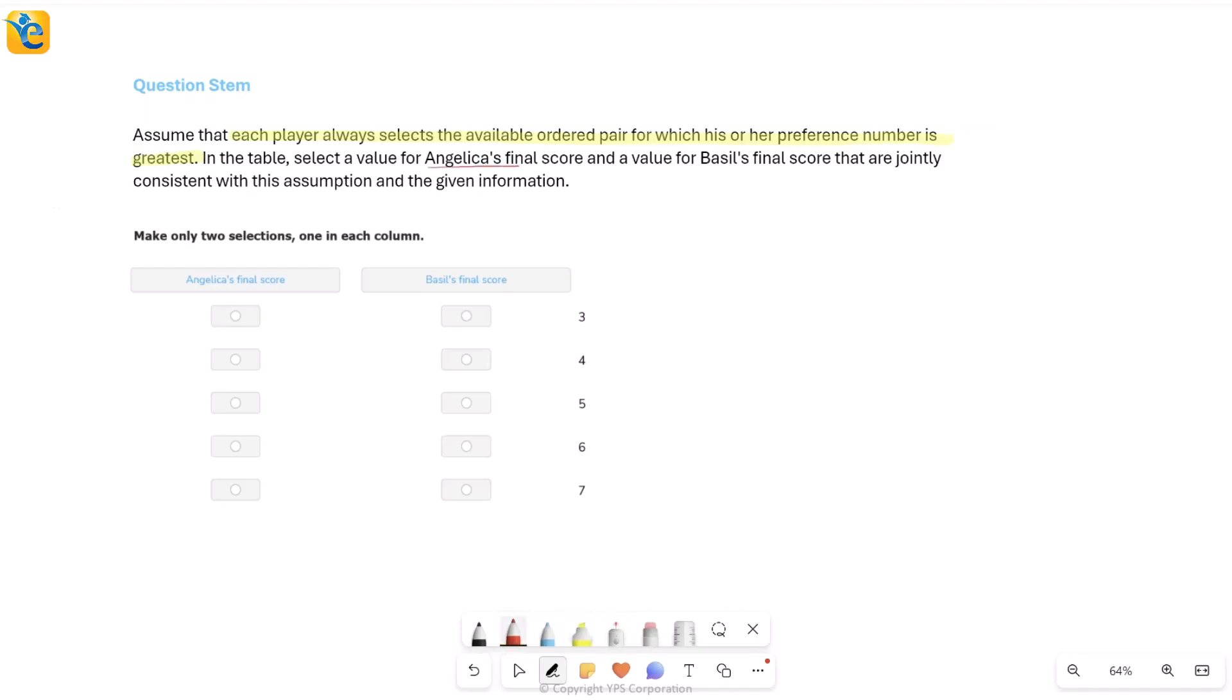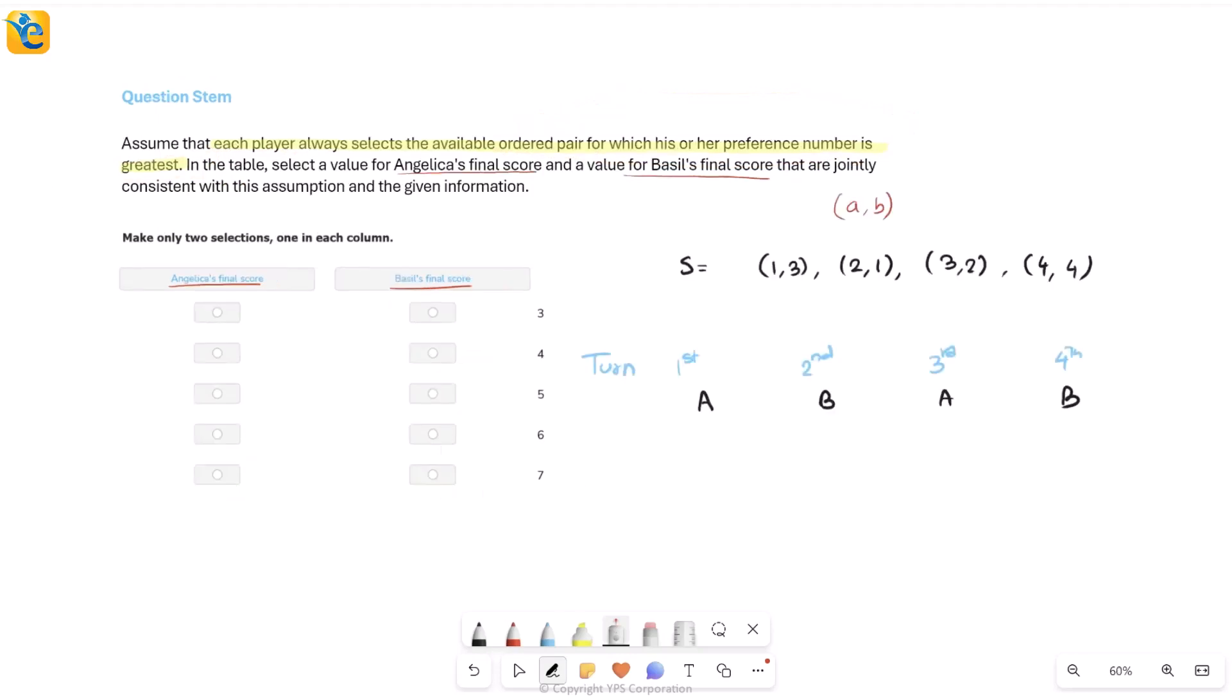The question wants you to select Angelica's final score here in the first column and Basil's final score here in the second column based on all the given information. So I'll simply bring in the things that we had earlier and we'll combine it with this new information about how the picking is done. Let's see. Perfect. Just look. Here are the four ordered pairs. This is how we're reading any ordered pair.